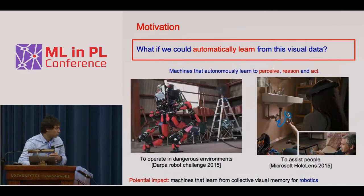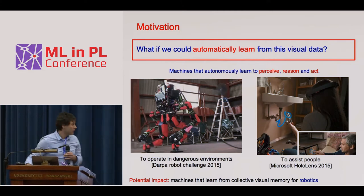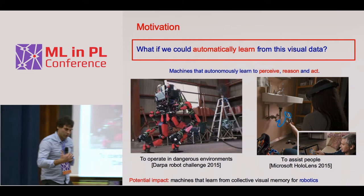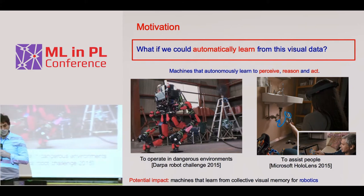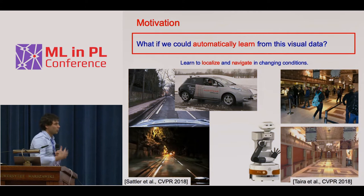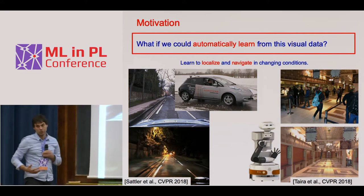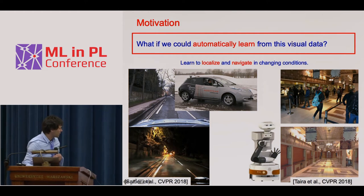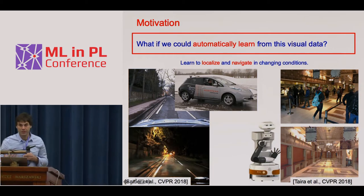One particularly exciting area is building machines that learn from data by observing people — how to do things, how to learn sequences of manipulation actions to complete complex tasks like changing a tire. Those machines could then go and perform tasks in new environments which are dangerous for people, give instructions to novice users, or learn to localize and navigate from visual experiences in changing conditions, such as day to night or crowded versus empty scenes.